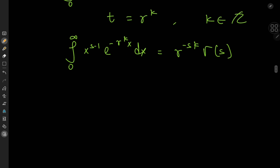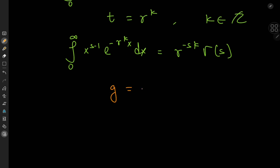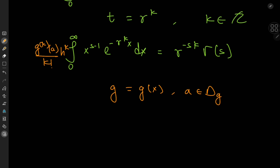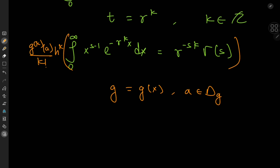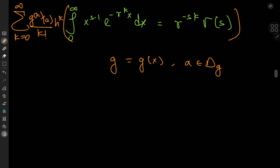Now I'm about to introduce another function into the mix. That function is g, and all we know about it is that it's analytic. The function g being analytic means we can expand it as a Taylor series centered at some real number a in the domain of g. The coefficients of the Taylor series would be g's k-th order derivative at a, divided by k factorial, times h to the k, where h is the distance from a. We'll take these coefficients, multiply the whole equation by them, and sum over all non-negative integers k.